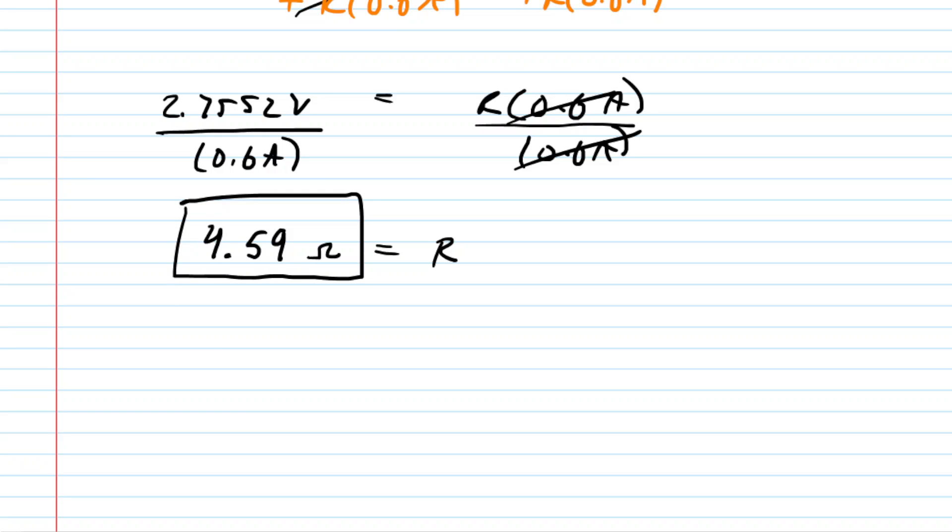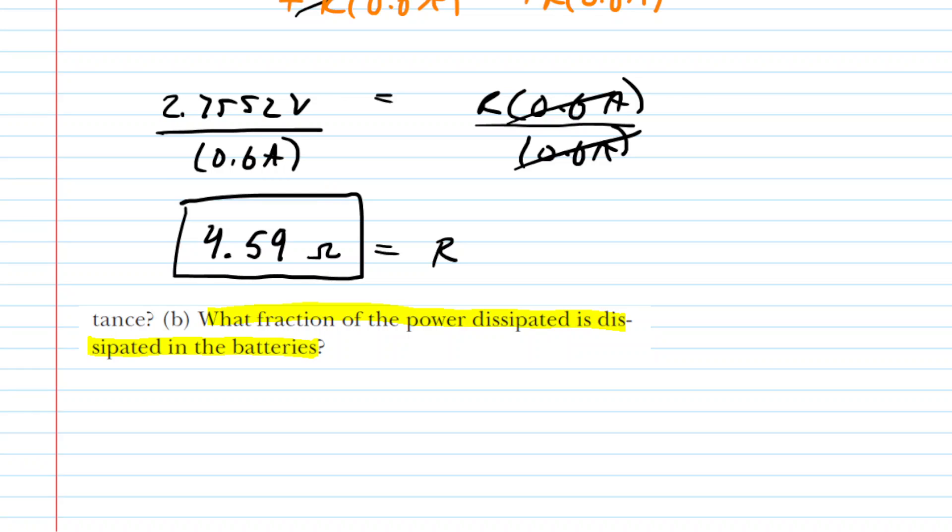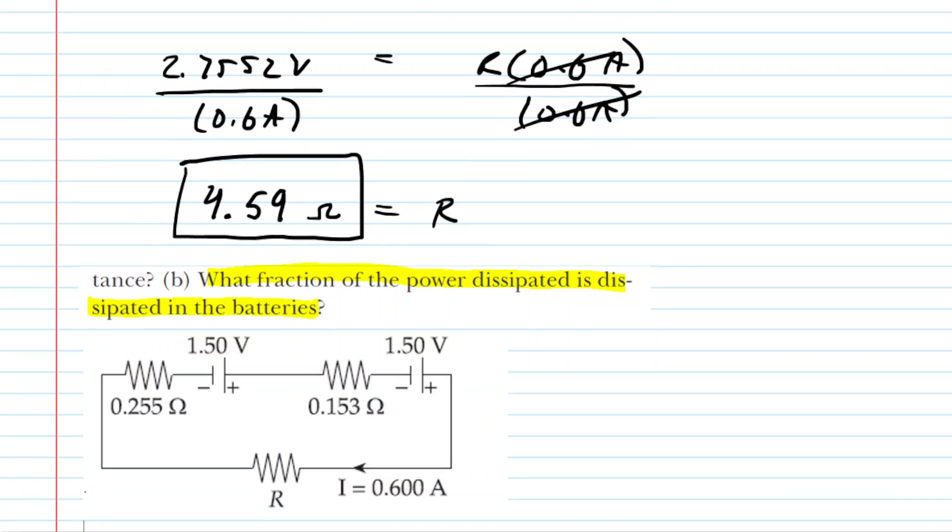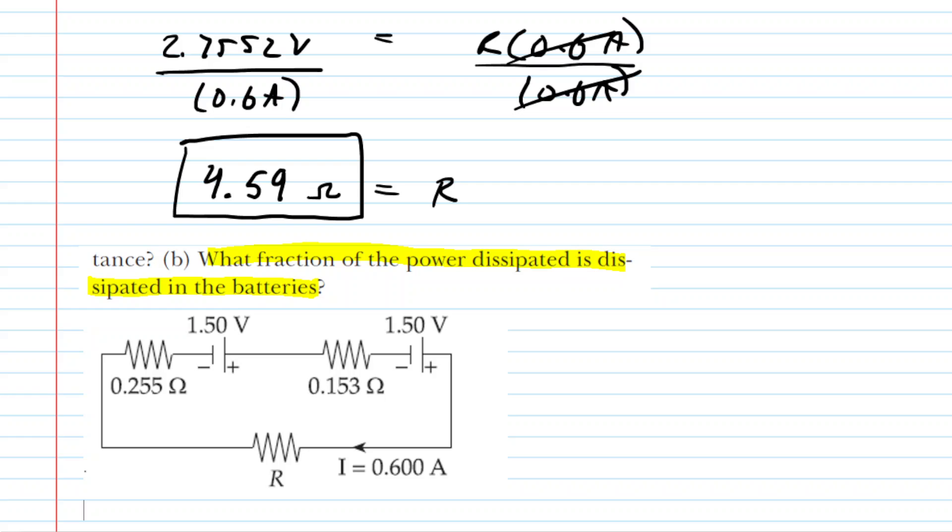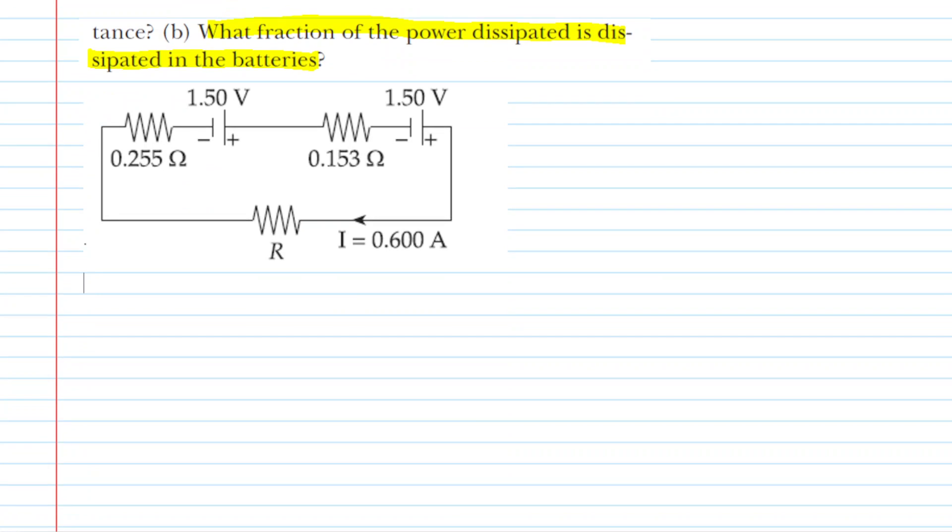And it says, what fraction of the power dissipated is dissipated in the batteries? So to understand that, let's take a look at the circuit again. And the first task for us would be to calculate the total power delivered by the batteries.